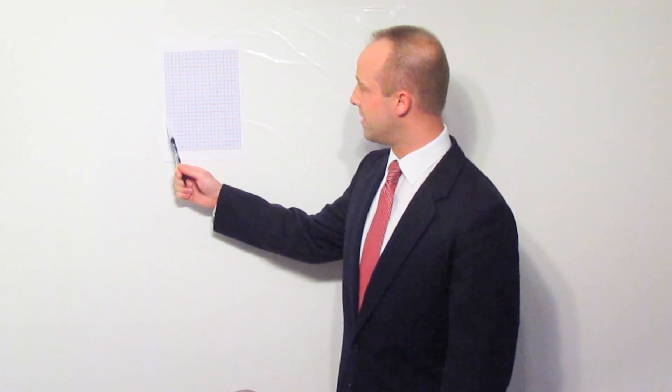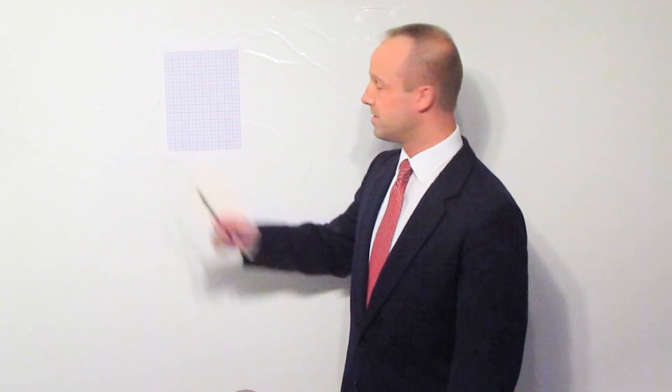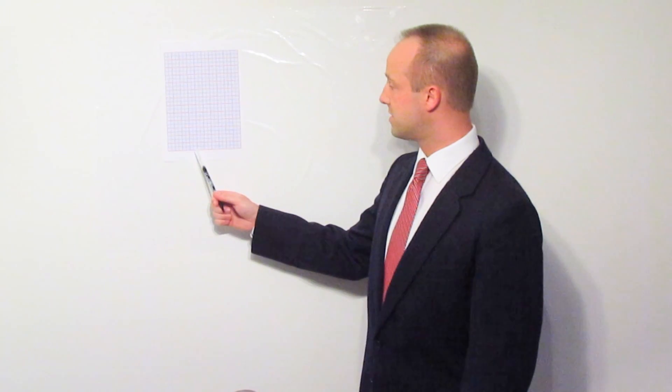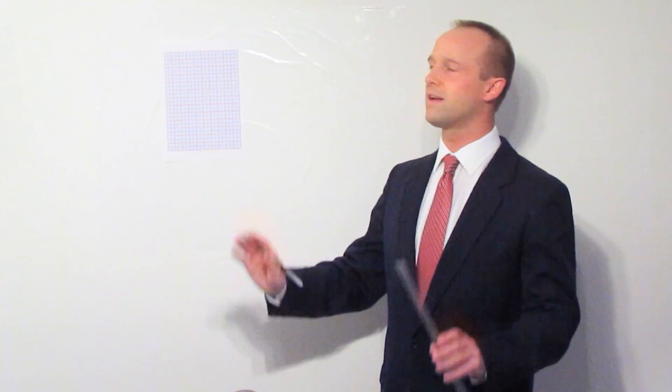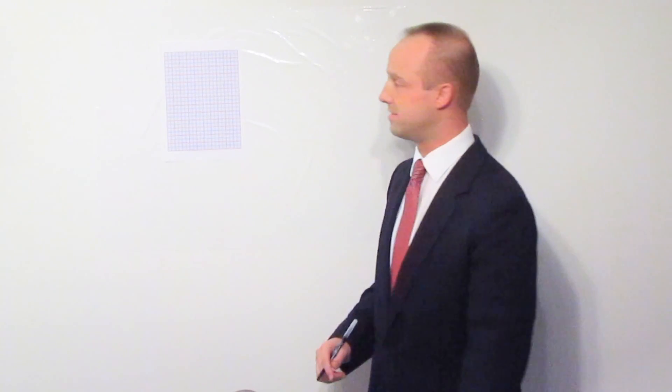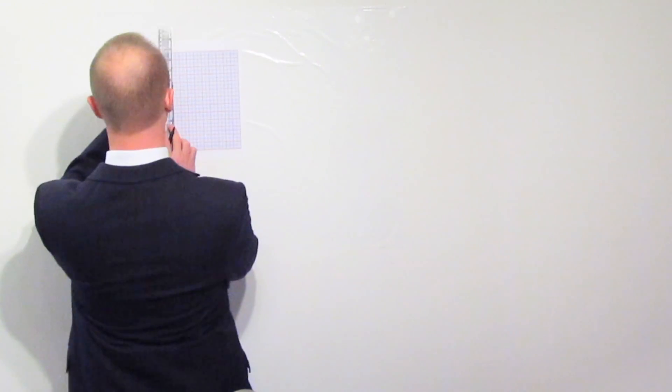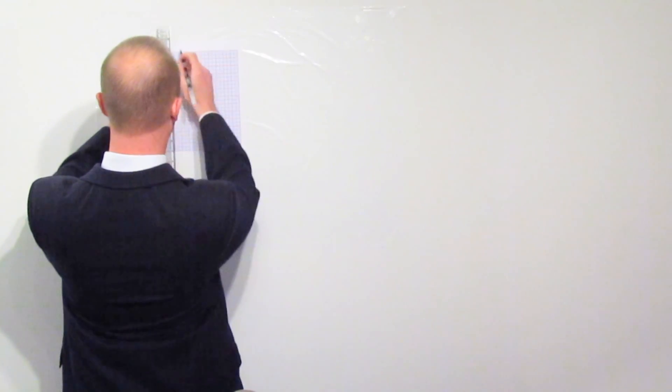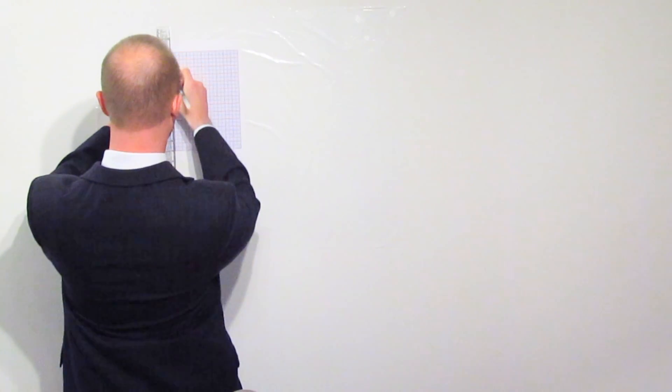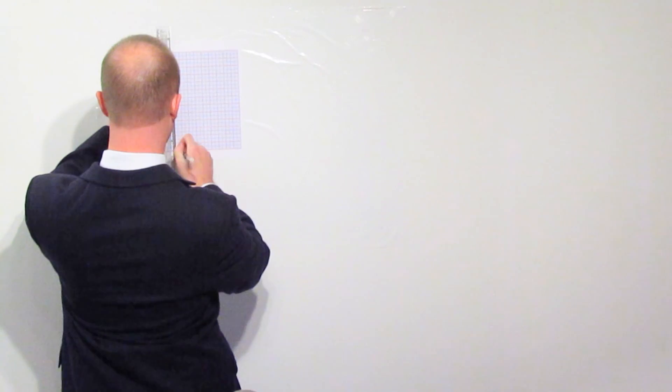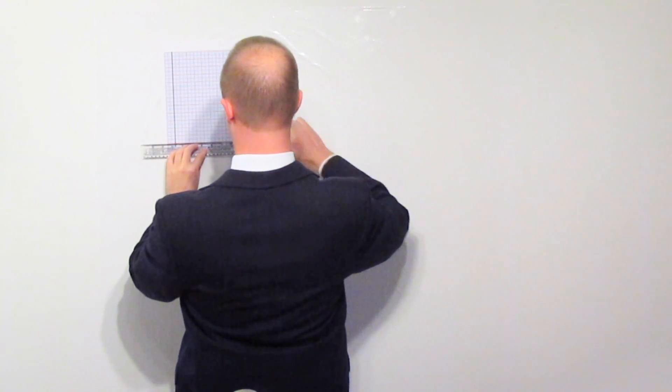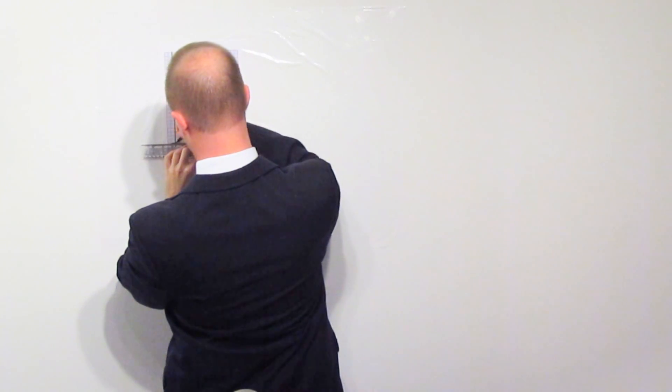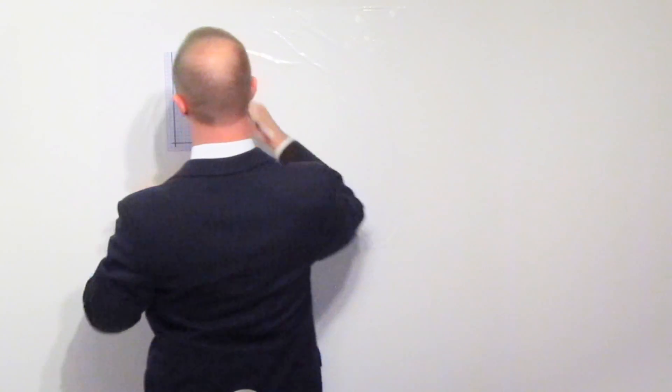So what I want you to do is go one of these large two centimeter squares in from the side and the same from the bottom and you're going to draw your axes on there. Don't give a second thought to what your numbers are, just draw the axes like this. So there's my vertical axis and the horizontal axis.